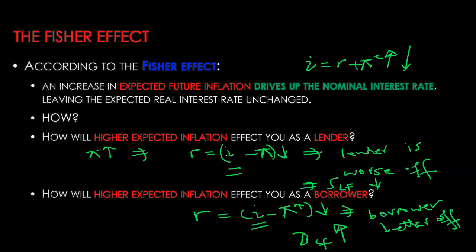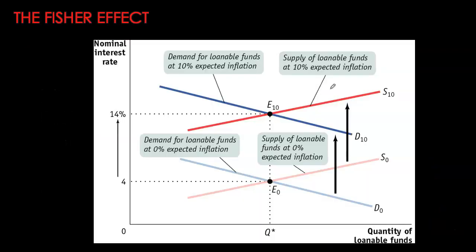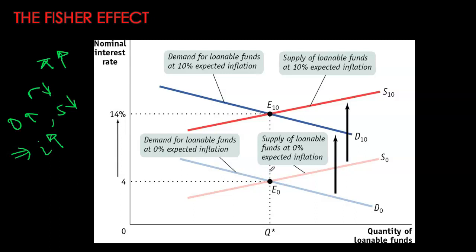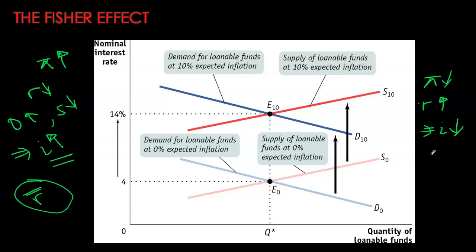So both supply and demand curves are shifting: supply shifts left and demand shifts right. With increased demand and decreased supply, we have a higher nominal interest rate. The Fisher effect is thus confirmed by our demand-supply framework: whenever inflation rises, nominal interest rate also increases by the exact same amount, leaving our real interest rate overall unchanged. In this case, our initial expected inflation was zero; with higher expected inflation at 10%, nominal interest rate also increased by 10%. For every 1% change in inflation, nominal interest rate changes by 1%, leaving real interest rate unchanged.